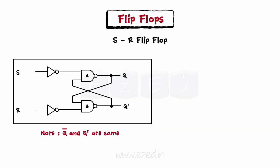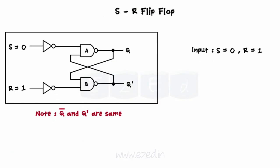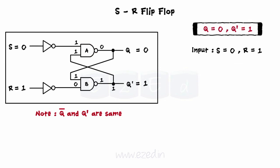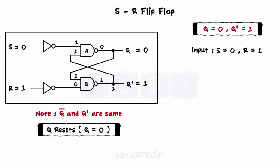Consider the second case, where S equals 0 and R equals 1. With Q equals 1 and Q dash equals 0, gate B receives inputs 1 and 0, so its output becomes 1, hence Q dash becomes 1. Gate A receives inputs 1 and 1, so its output becomes 0, hence Q becomes 0. Q resets. Thus, R equals 1 condition resets the output, which signifies the name of the input as R.